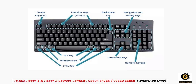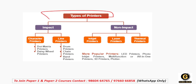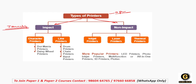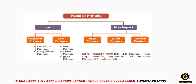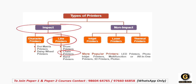Next topic है types of printer। Printer एक output device है। इसको दो हिस्सों में बांटा गया है: impact और non-impact printer। Impact printer में printer की device का main part paper के साथ touch करते हुए काम करता है। इसके दो types हैं: character और line। Character के types हैं dot matrix और daisy wheel। Line के types हैं drum, chain और band। Non-impact में आता है inkjet, laser और thermal। Exam में पूछा जा सकता है कि chain printer किस category में आता है — यह line printer के अंदर impact में आता है।